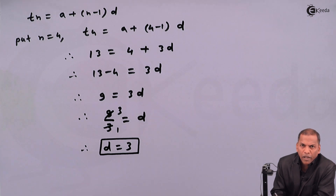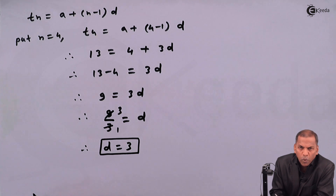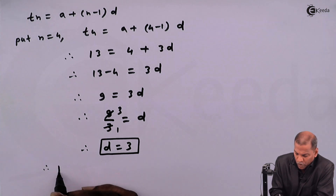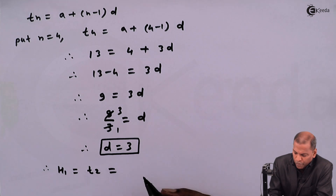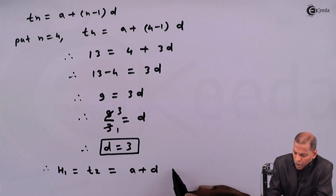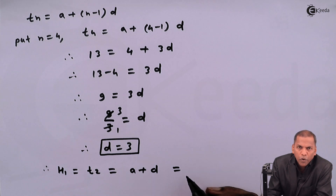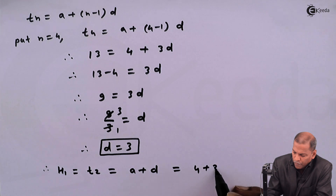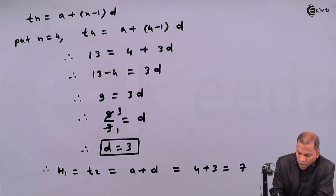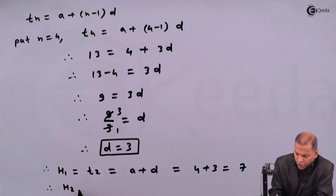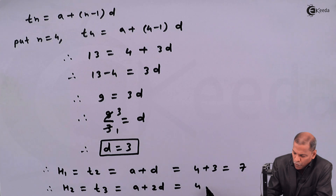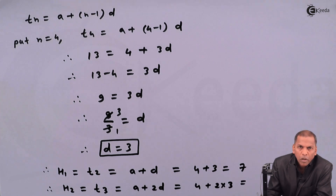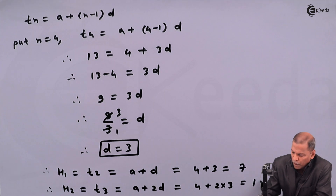Now we find the second term t2, which equals h1. Therefore h1 equals t2. The formula for the second term of AP is a plus d. Substituting a equal to 4 and d equal to 3, we get 4 plus 3 equal to 7. Now we find the third term h2 equal to t3. The formula for t3 is a plus 2d, equal to 4 plus 2 multiplied by 3, giving 4 plus 6 equal to 10.